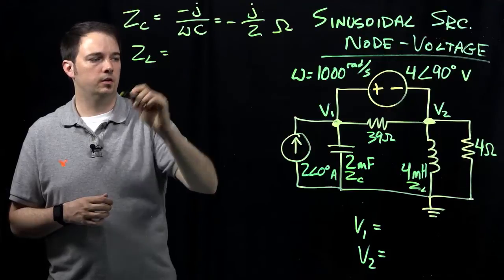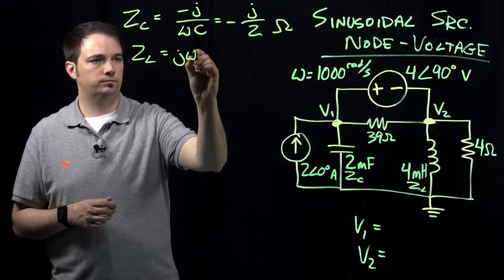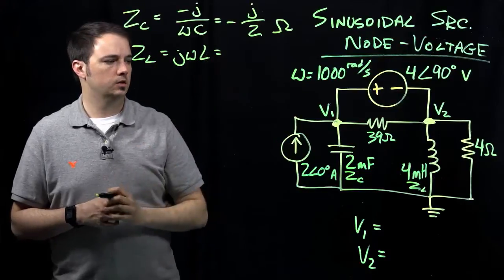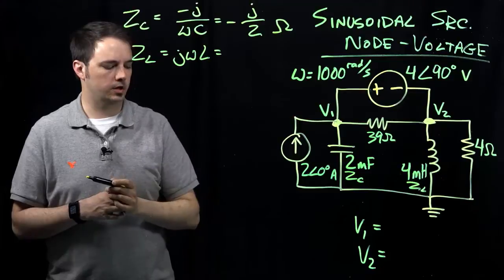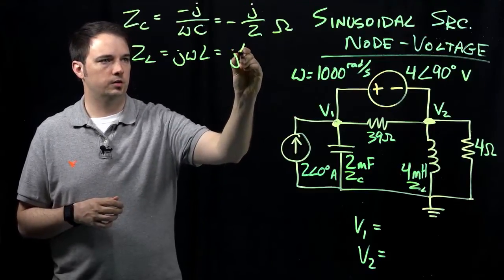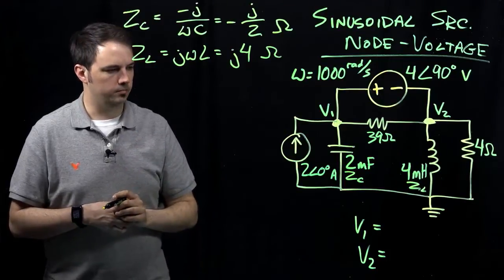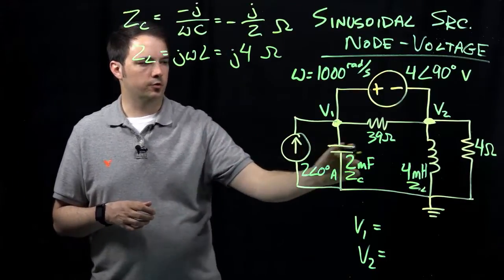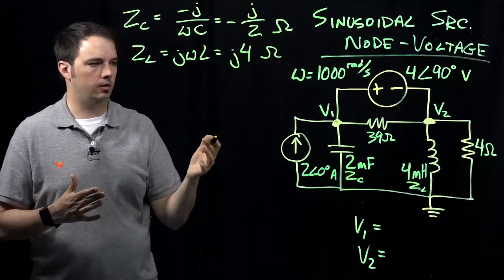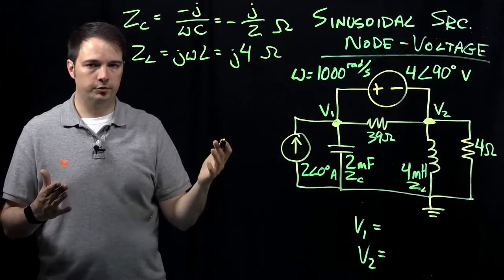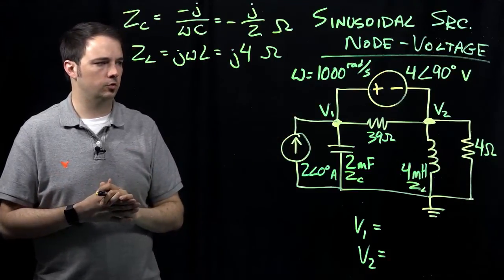The impedance for my inductor is given as J omega L, so I have four millihenries times a thousand radians per second, which gives me a value of J times four, also in ohms. Now that we have the impedances for our capacitor and inductor, we can start thinking about how to use the node voltage approach to evaluate what these two voltages V1 and V2 are.